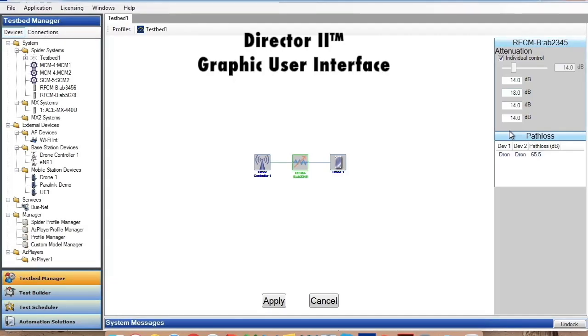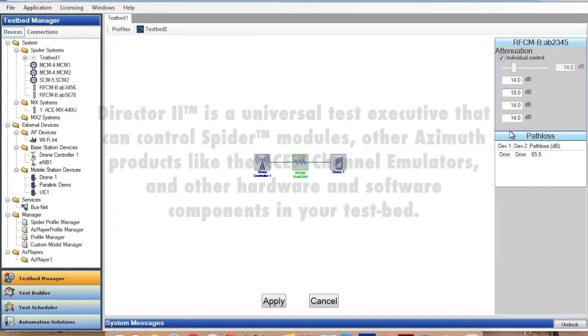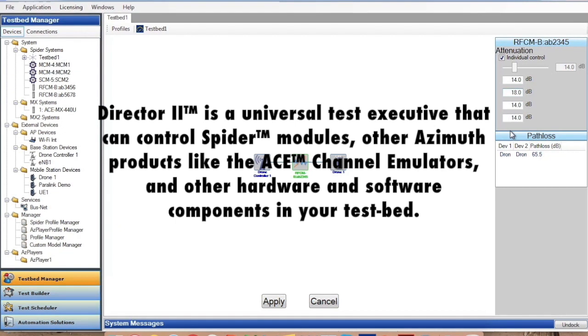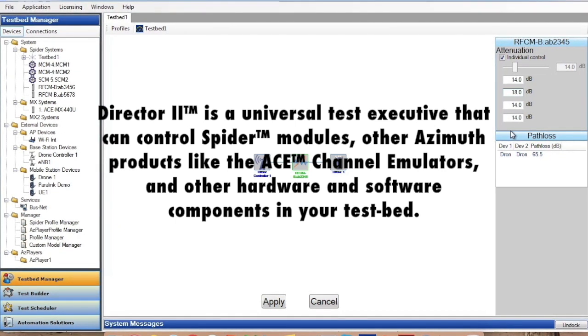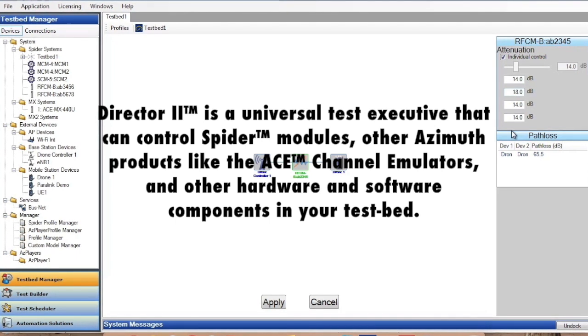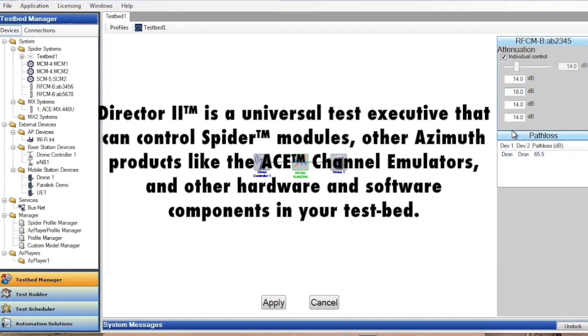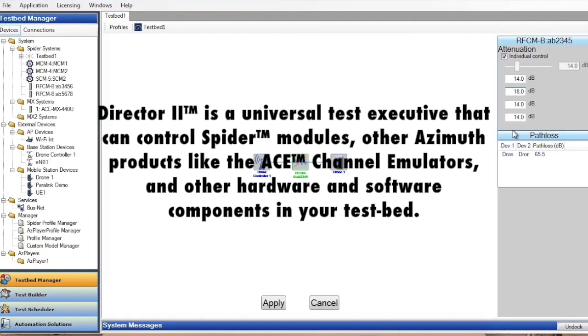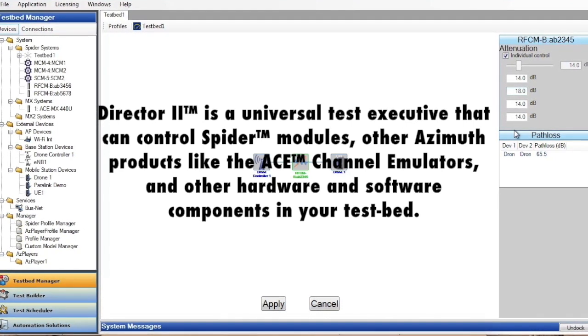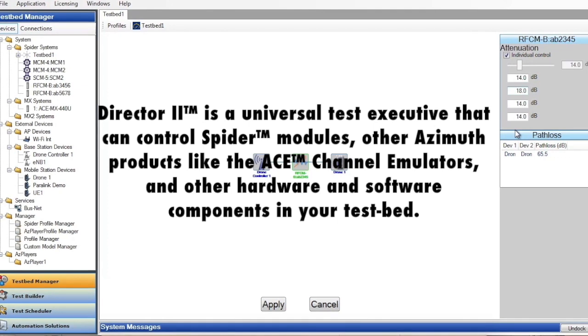Let's look at the software. What you have here is Directed To. Directed To is a universal test executive that allows you to control Spyder and other Azimuth products such as the ACE channel emulators and other elements of your testbed, whether it's an access point, a drone, a drone controller, a handset, software like Wireshark, diagnostic monitors.